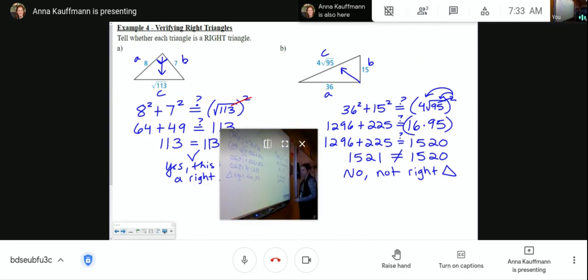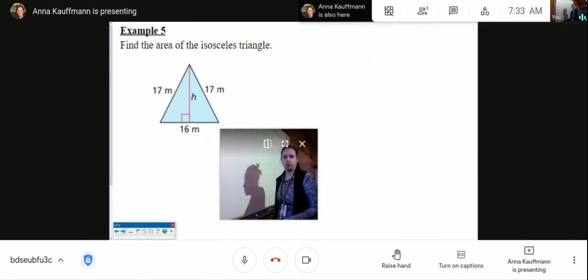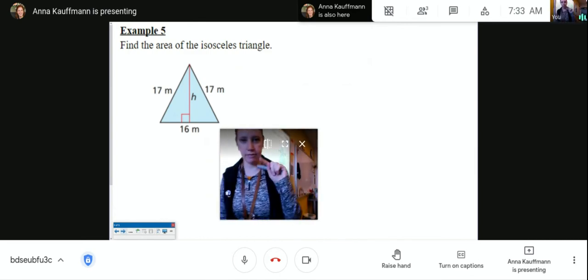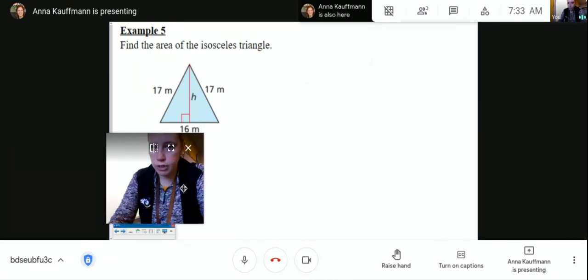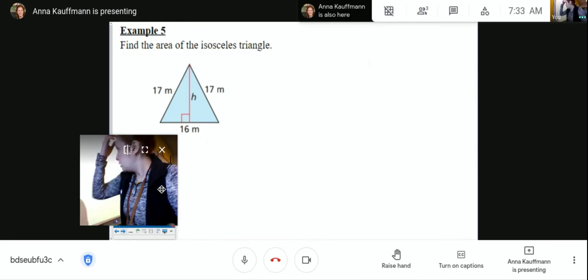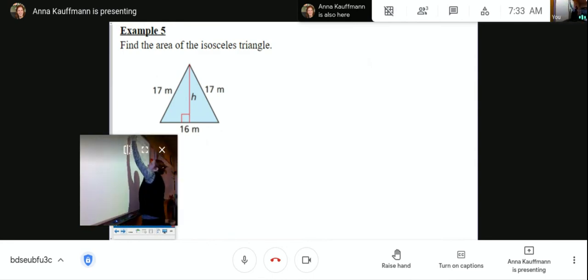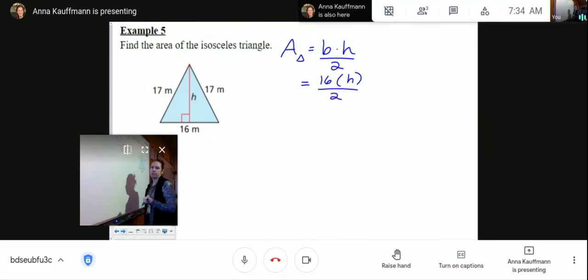All right, our last example. Find the area of the isosceles triangle. I see it's 17 and 17, and the base measure is 16. So recall to find the area of a triangle, you do the base times the height divided by 2. So our base in this case is 16. I'm not sure of my height, and we're going to divide by 2. So the piece that we need to figure out is the height.